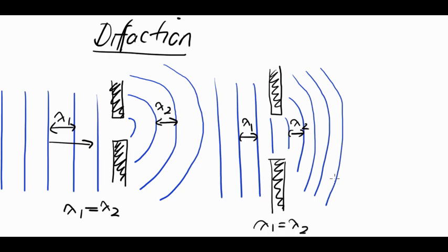But the difference is that for the first diagram we have quite a large diffraction. On the second diagram, the waves bend, but they don't bend nearly as much.